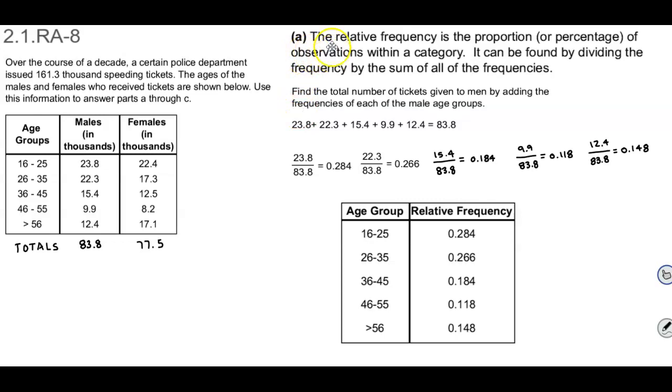So for part A it says the relative frequency is the proportion or percentage of observations within a category and it can be found by dividing the frequency by the sum of all the frequencies. So here we're creating a relative frequency distribution.